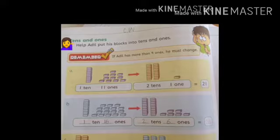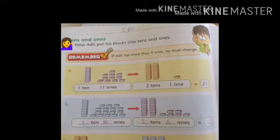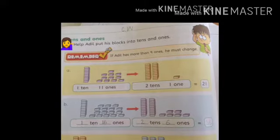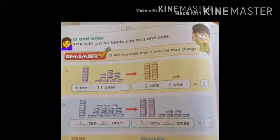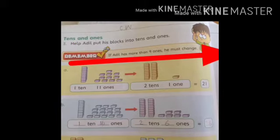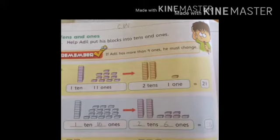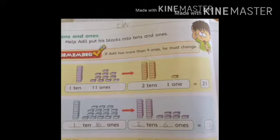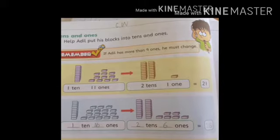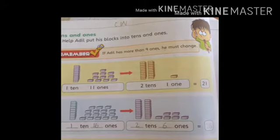Look at page number 28. Tens and ones. Help Adil put his blocks into tens and ones. Remember, if Adil has more than nine ones, he must change. Agar Adil ke paas nine se zyada ones huye toh usay lazmi change karna hai. Look at an example.